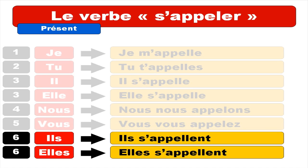And finally, ils pluriel, masculine form, and elles: you get ils s'appellent. That's the same concept — usually you should have 'se,' but starting with a vowel, it disappears, and you get ils s'appellent. Repeat. Ils s'appellent. And then elles s'appellent. Repeat. Elles s'appellent. So if you noticed, between ils and elles — the plural form and the singular form — it's actually the same pronunciation. Il s'appelle. Elle s'appelle. Ils s'appellent. Elles s'appellent. Repeat.